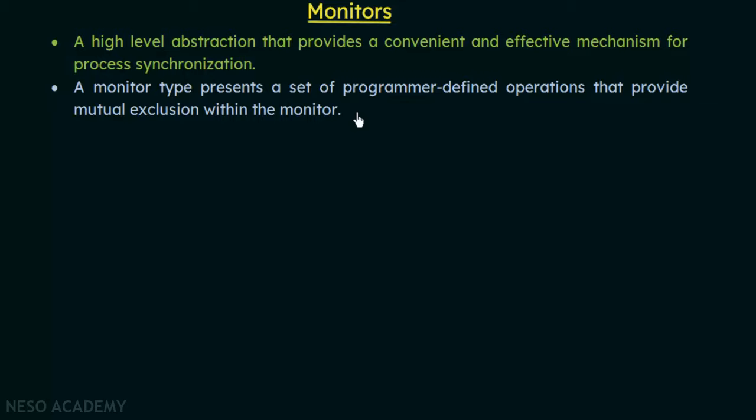To avoid this, monitors provide a set of programmer-defined operations where mutual exclusion happens within the monitor itself. Unlike semaphores, the processes don't have to be programmed to follow the rules — the monitor itself provides mutual exclusion. When a process wants to access shared data or enter a critical section, it does so via the monitor, which handles all the synchronization requirements.